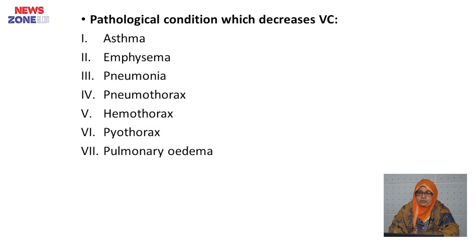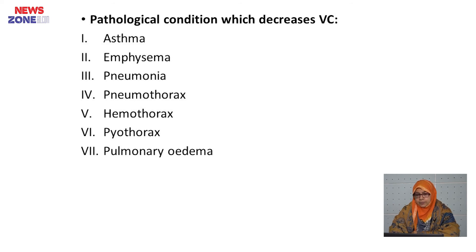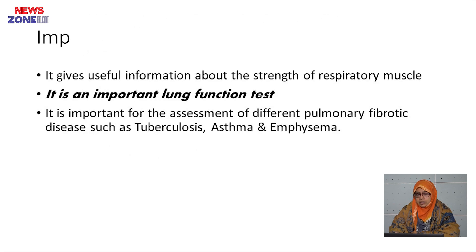Pathologic conditions that decrease vital capacity include asthma, emphysema, pneumonia, pneumothorax, hemothorax, pyothorax, and pulmonary edema. The importance of vital capacity: it gives useful information about the strength of respiratory muscles, it is an important lung function test, and it is important for assessment of pulmonary fibrotic diseases such as tuberculosis, asthma, and emphysema.